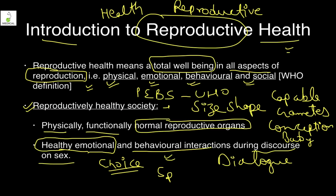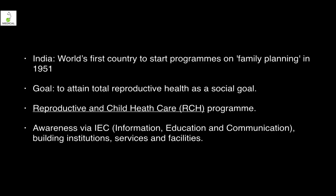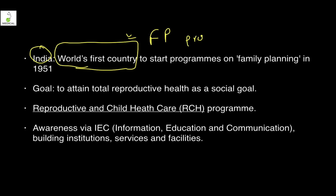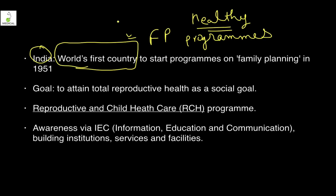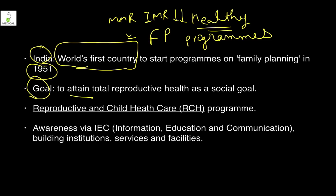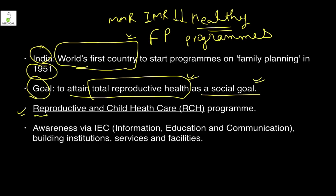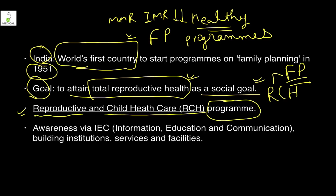India is the world's first country to start family planning programs, done to ensure healthy families, decrease maternal mortality rate and IMR. It was started in 1951, just four years after independence. The goal was to attain total reproductive health as a social goal. The current program is called the RCH — Reproductive and Child Health Care programme.